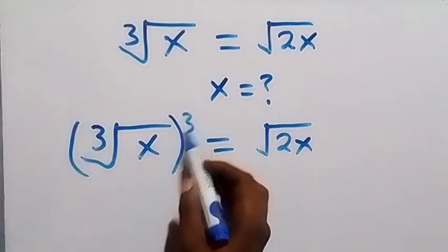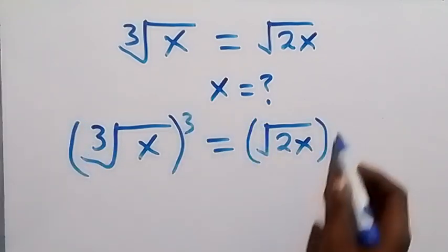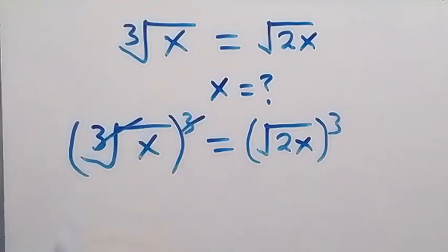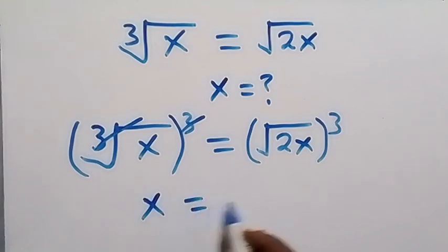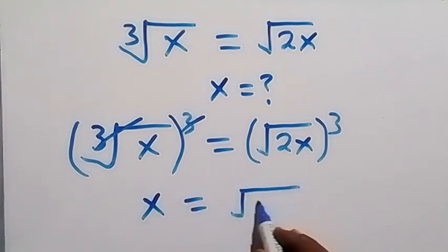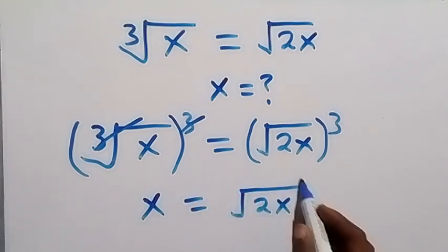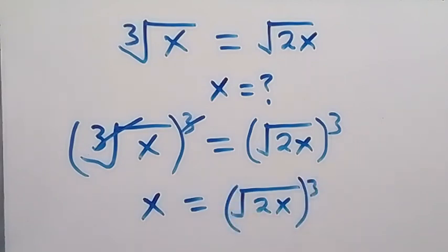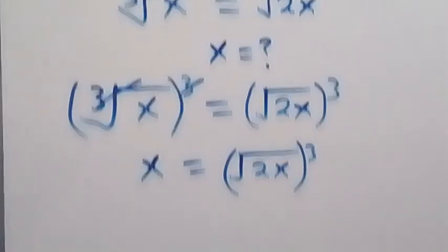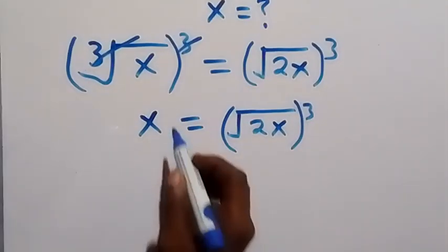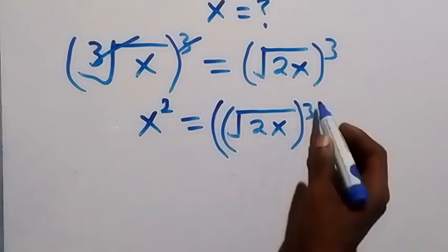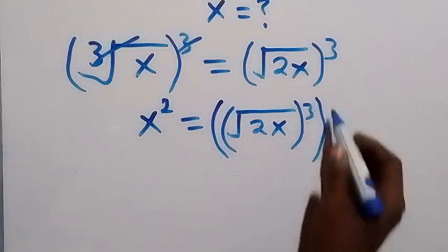To remove the cube root, raise both sides to power 3. The power of 3 cancels the cube root, leaving x on the left, equal to the square root of 2x raised to power 3. In the next step, let's raise both sides to power 2 as well.